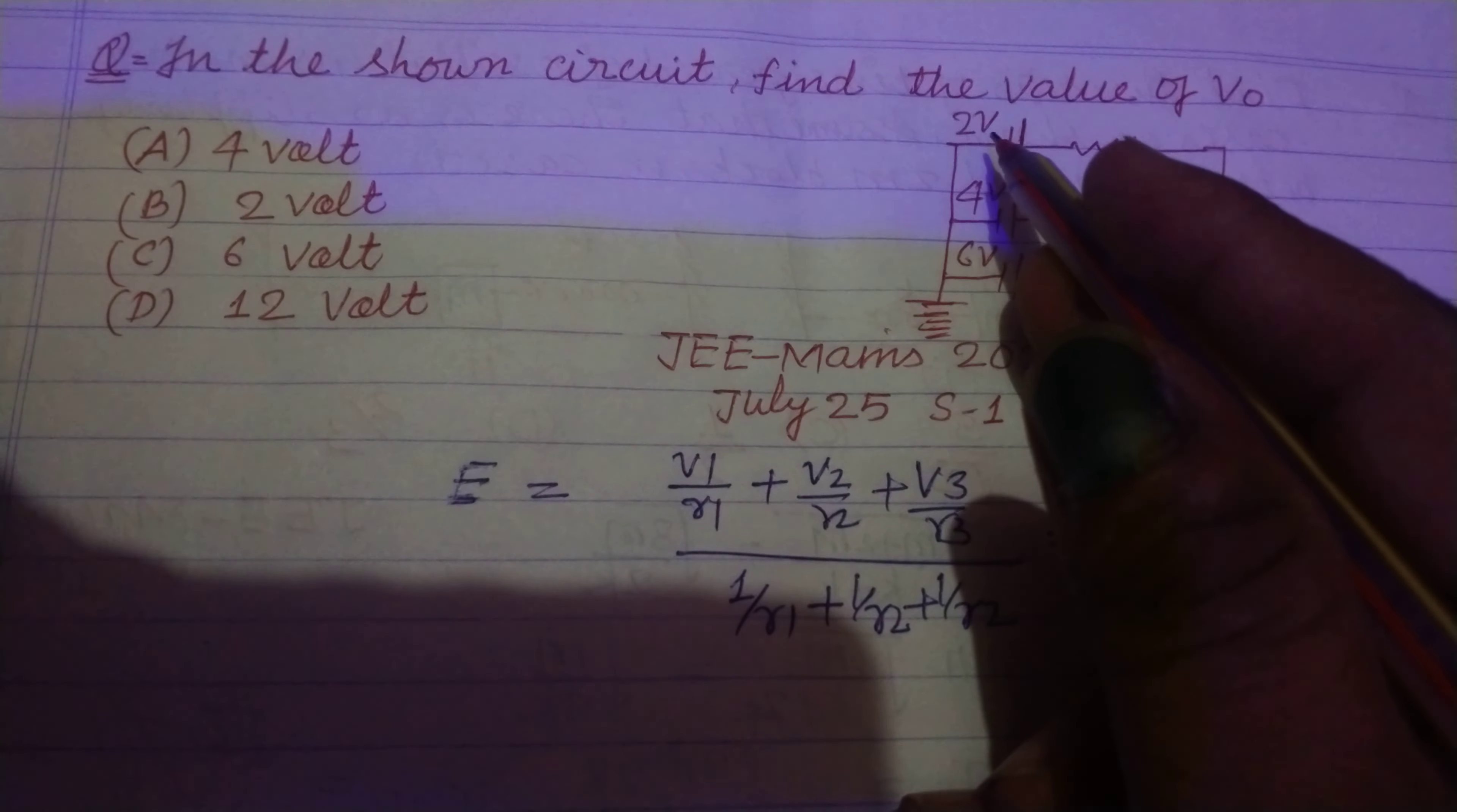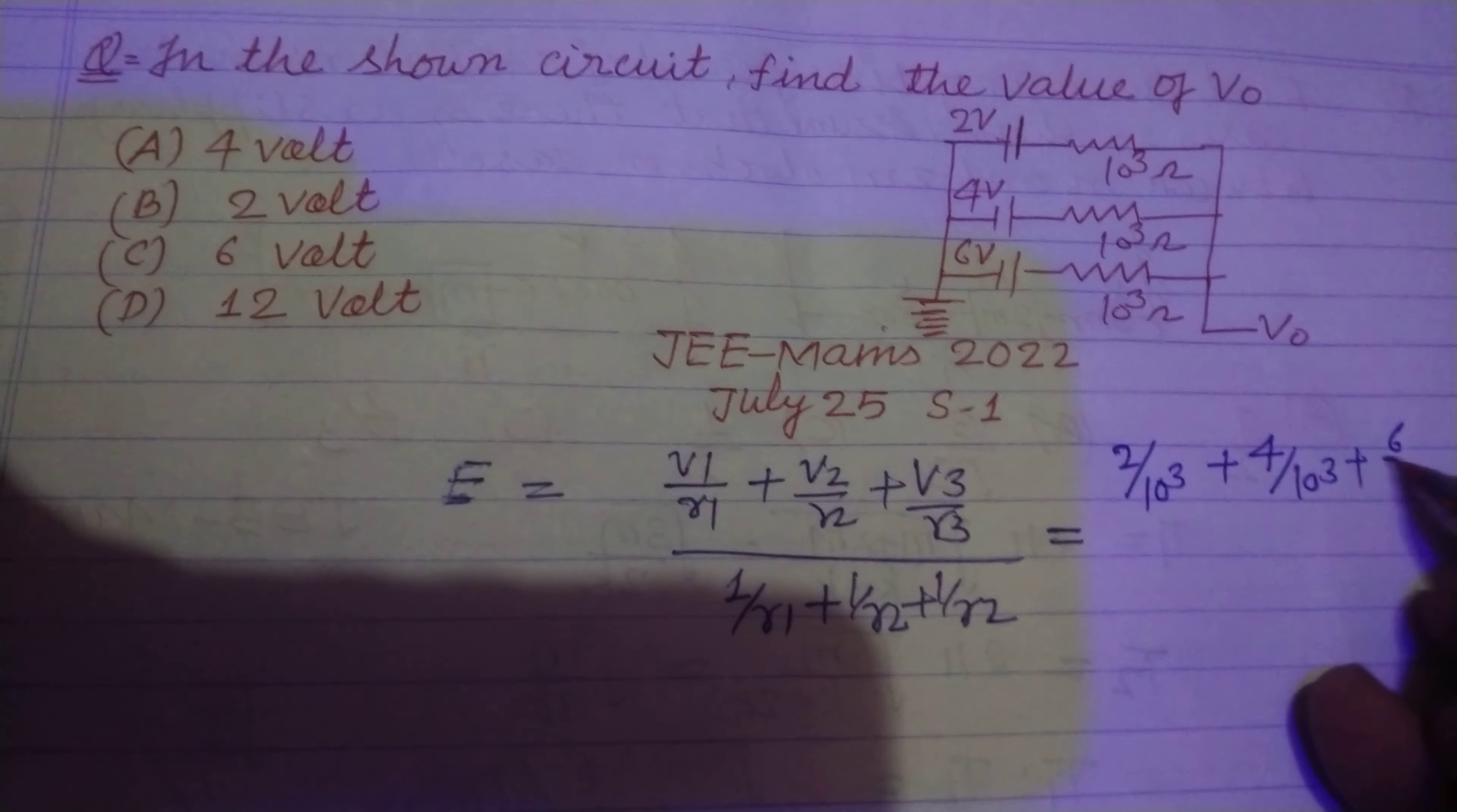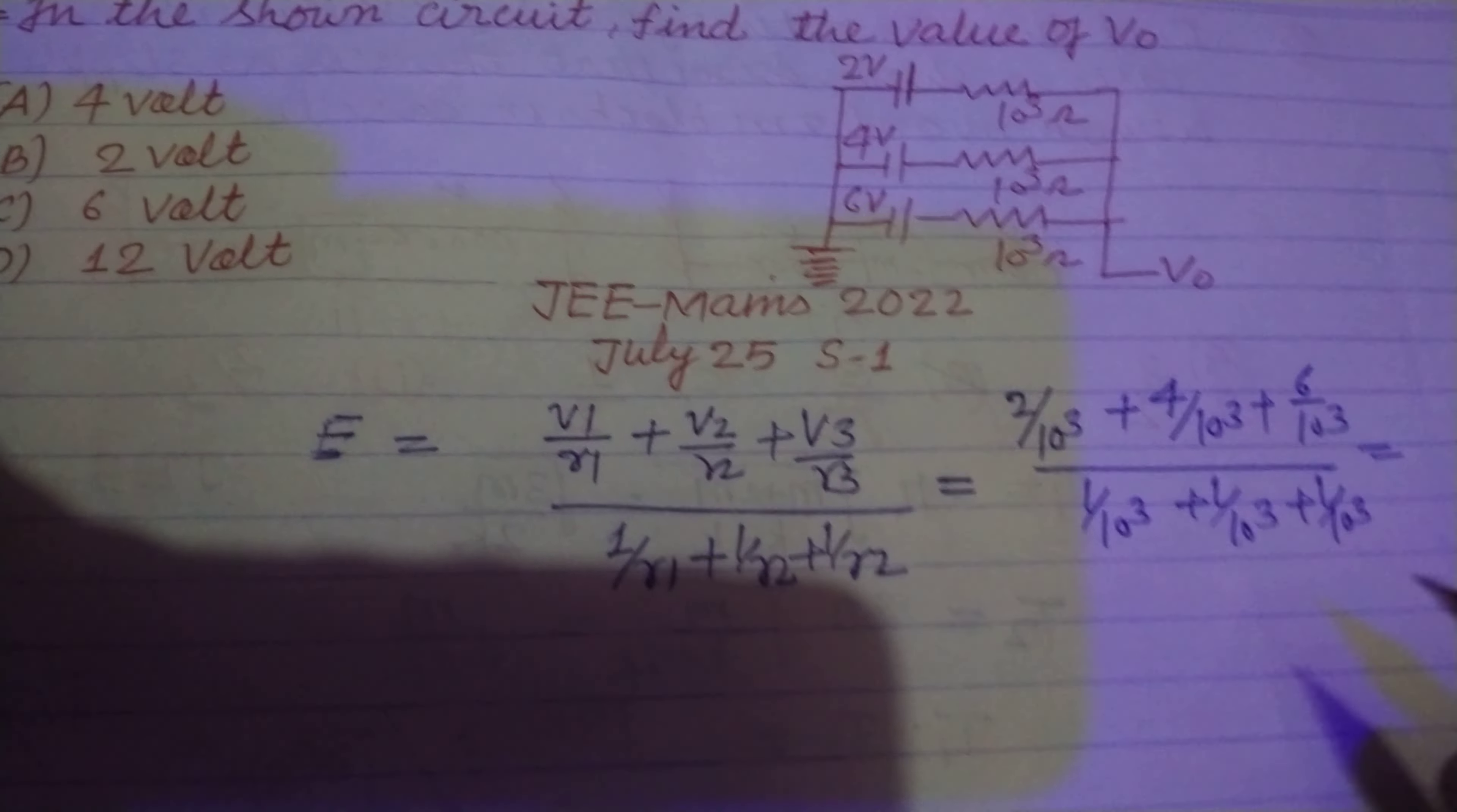Putting the values here, V1 is 2V, V2 is 4V and V3 is 6V. So, 2 upon 10 to the power 3 plus 4 upon 10 to the power 3 plus 6 upon 10 to the power 3 over 1 upon 10 to the power 3 plus 1 upon 10 to the power 3.